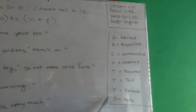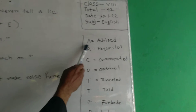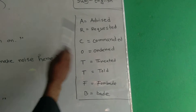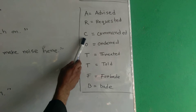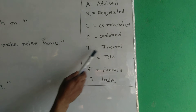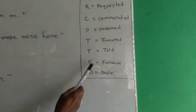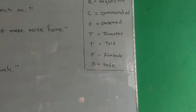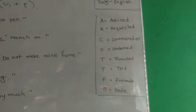Dear students, for your better understanding I have written here some important things. A for advised, R for requested, C for commanded, O for ordered, T for threatened, T for told, F for forbid, B for bade. These are some important things.